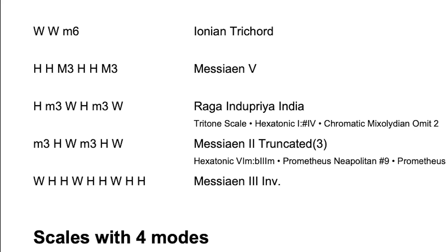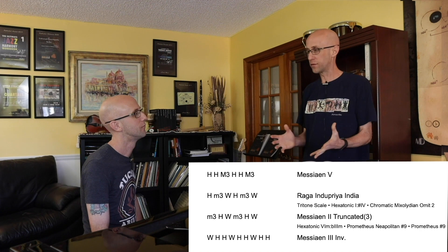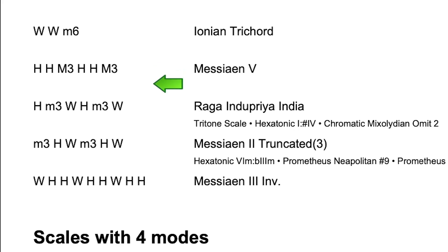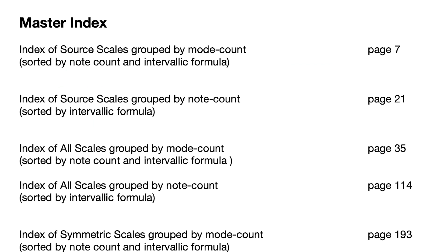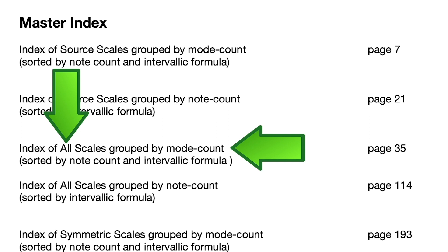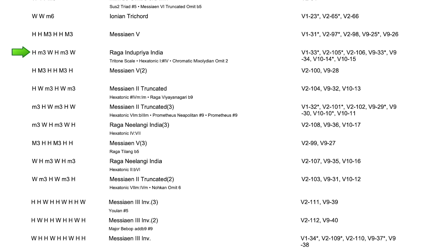So for example, the Raga Dupriya India showing here has to be symmetric with only three modes. And if we count the intervals in the intervallic formula, we can see it has six notes. And those are the only symmetric scales with three modes? Not at all — these are the only symmetric source scales with three modes. This is an index of source scales. If you want to see all symmetric scales with three modes, you can use the index that says: index of all scales grouped by mode count, sorted by note count and intervallic formula. So there's the Raga Dupriya India, but you can see all other symmetric scales with three modes.